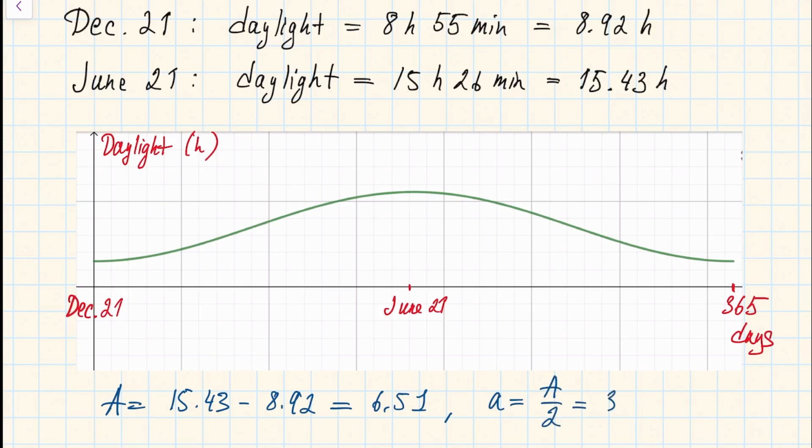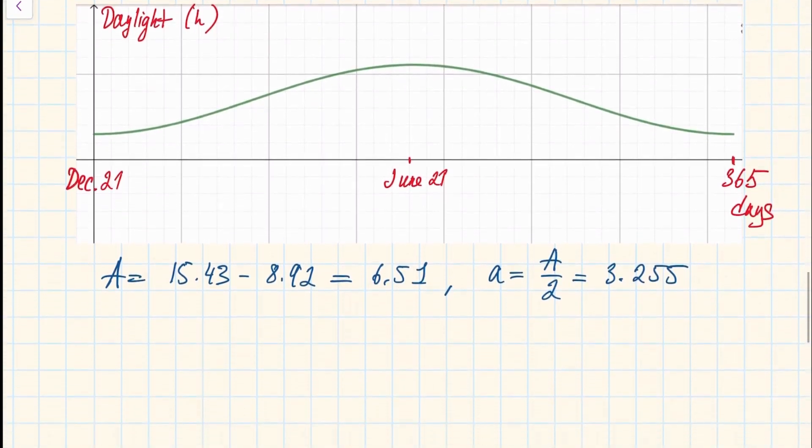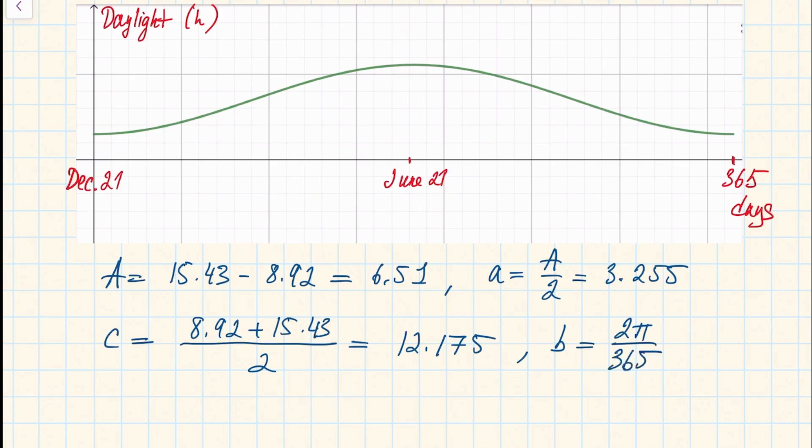Now to find the shift or this constant c, you have to find the middle value between the maximum and minimum, so actually you just can take the average of these two values which in this particular case will be 12.175. And finally, to find the constant b we have to divide 2π by the period, and in this particular case of course the period is 365 days.